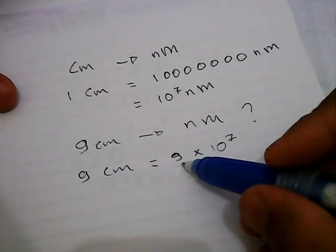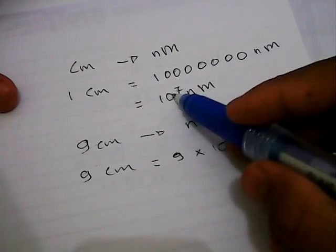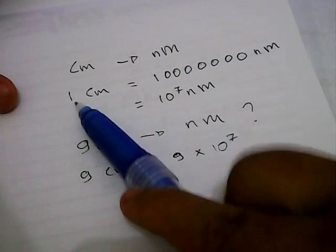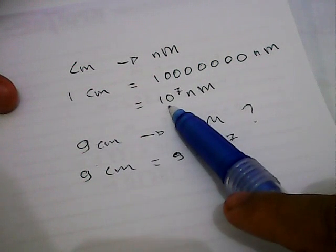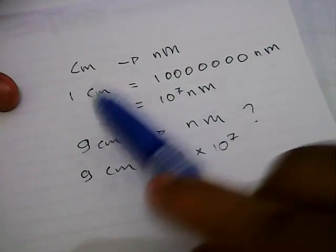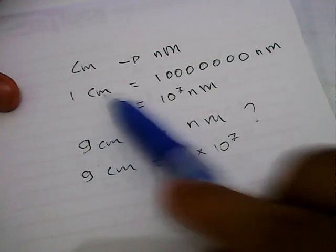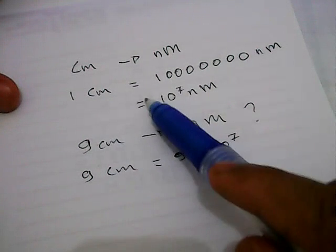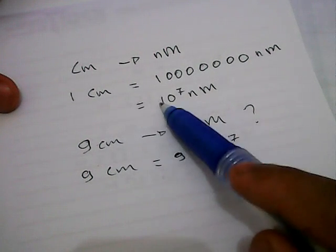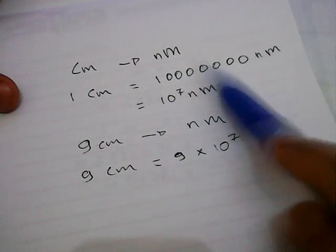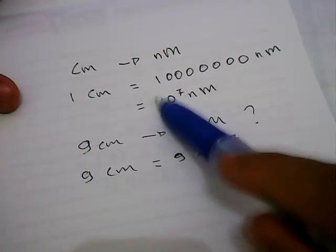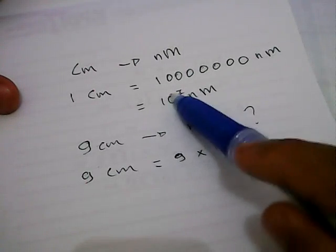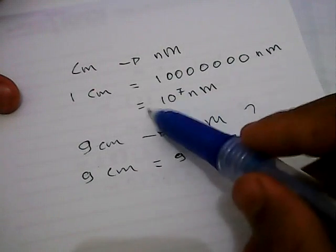Why do you need to multiply 9 by 10^7? In this case, one centimeter is equal to 10^7. It actually means one centimeter is equal to 1 multiplied by 10^7 nanometers. But we don't write this 1 multiplied by, because it's the same number—everything multiplied by 1 will result in its own number.